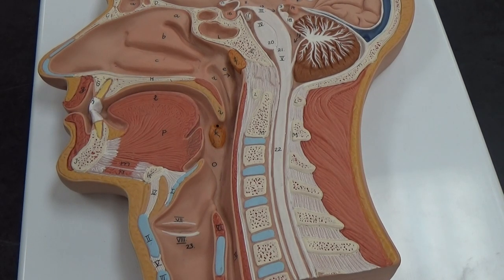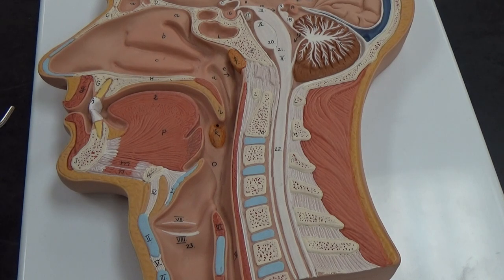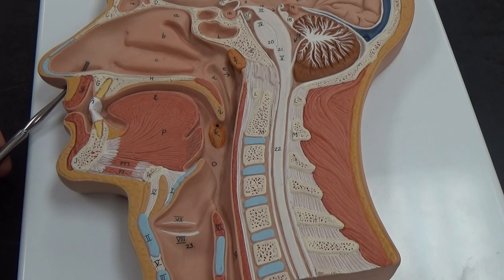Okay, so we're going to look at the respiratory structures associated with the head here. First we can see our external nares, so these will be where your nostrils are.